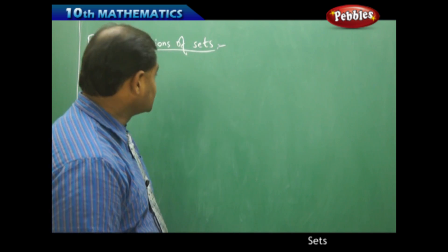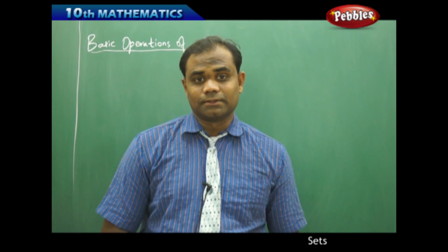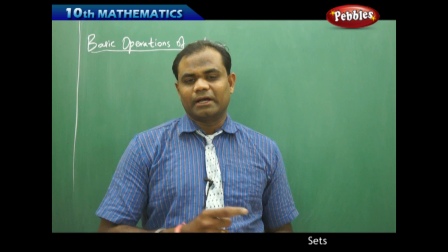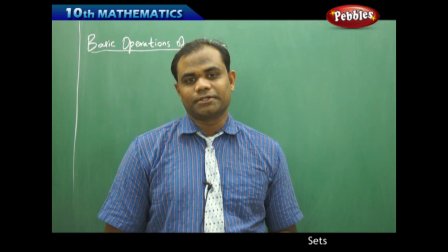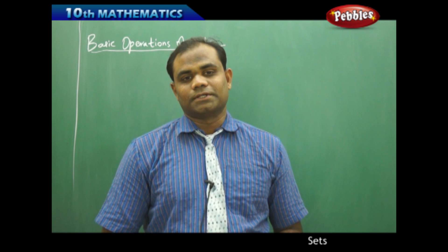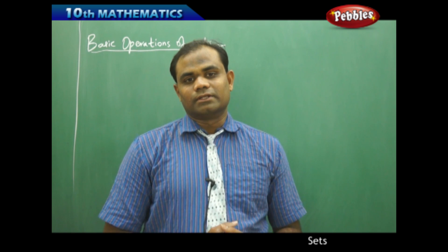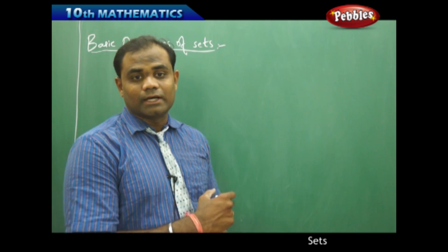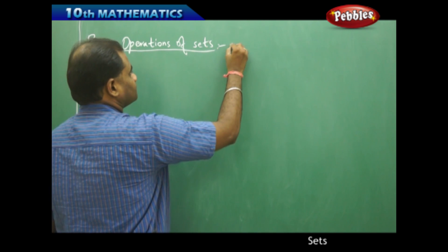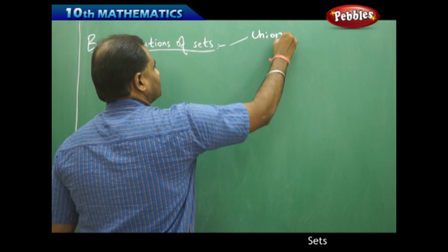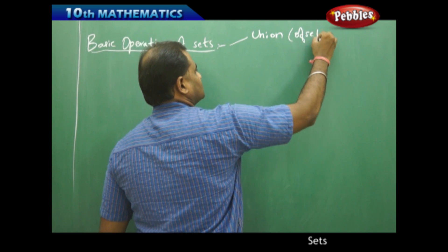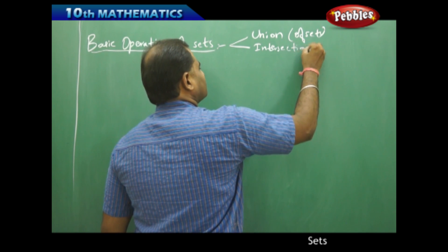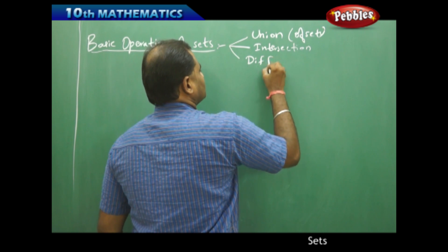There are basic operations of sets which we are going to discuss in this session. Just like two numbers are added — addition is the operation; when subtracted, minus is the operation; when multiplied, multiplication is the operation; and when divided, division is the operation. Similarly, two sets also have basic operations. The three basic operations we are going to discuss are union, intersection, and difference.